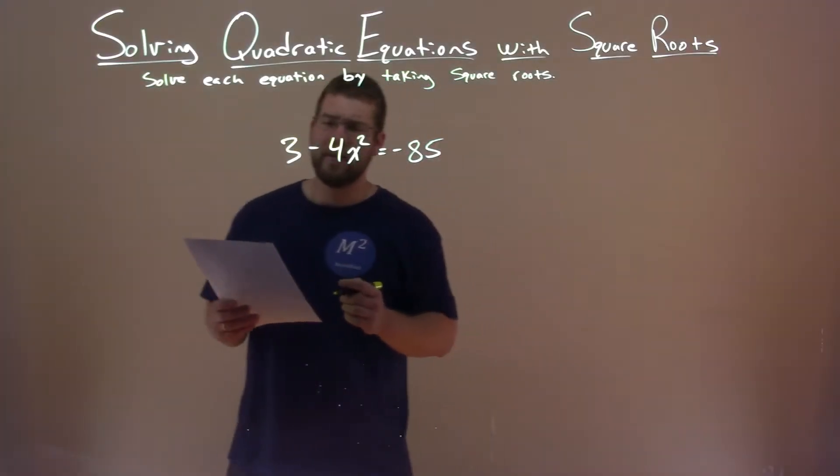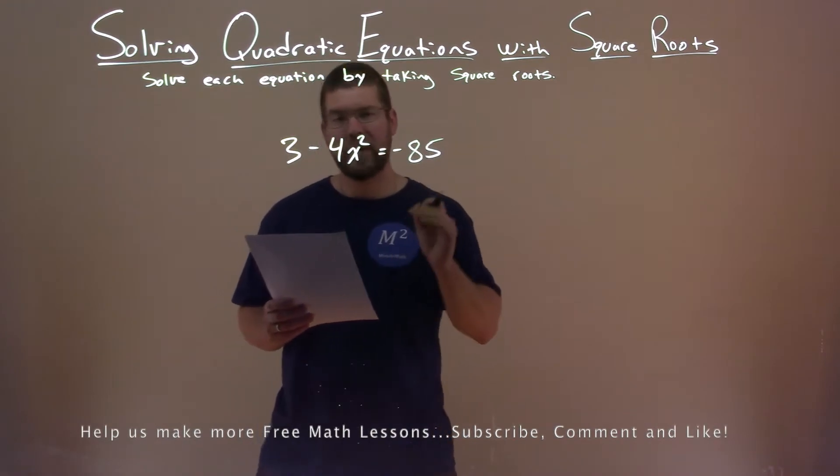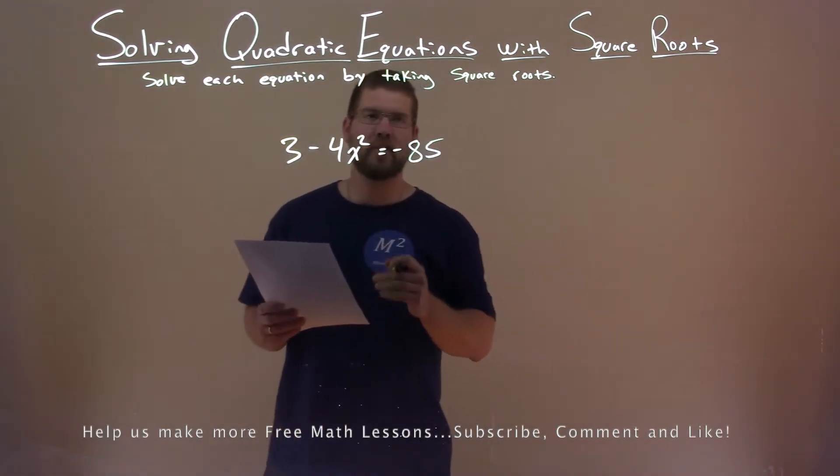We're given this problem right here: 3 minus 4x squared equals negative 85, and we want to solve this equation by taking square roots.